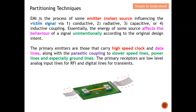On the topic of emitters: EMI is the process of a noise source or emitter influencing the victim signal. In EMC you need a noise source, a victim, and a medium through which the noise source reaches the victim — either by conductive contact, radiation through the air, or capacitive or inductive coupling, as I discussed in previous EMC videos. Essentially the energy from a source affects a signal unintentionally, upsetting the design without being part of the original design intent.